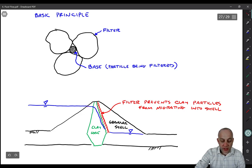So if we just constructed a very coarse shell right up next to the clay core, the water would push those clay particles into the granular shell. And slowly, over time, the clay core would erode out and we would lose stability of the dam. It wouldn't retain its water retention properties anymore.